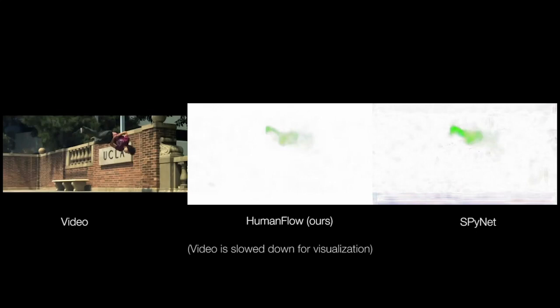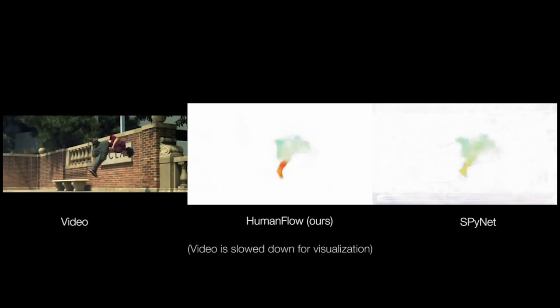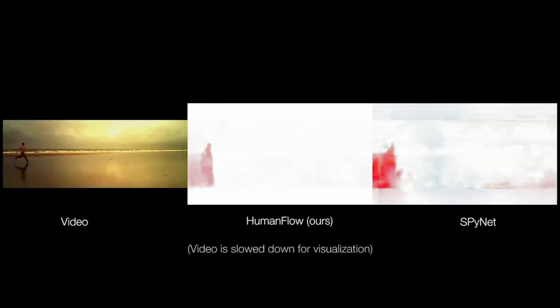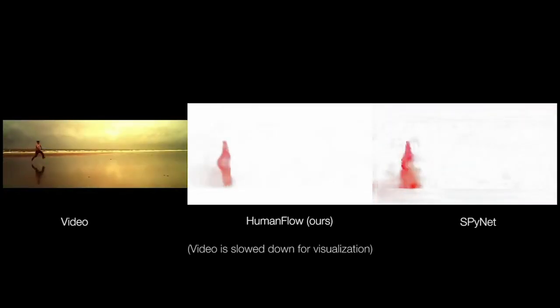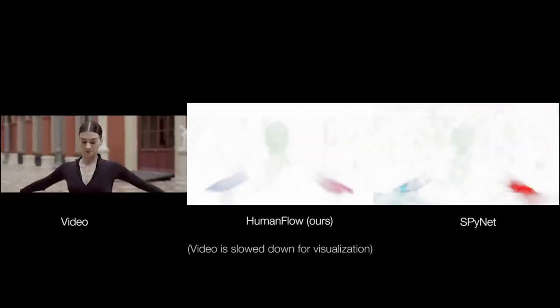The human flow algorithm estimates optical flow at 32 frames per second for 256 by 256 image resolutions. Our flow is less noisy than that of SPINET. The training frames are scaled and cropped at random.